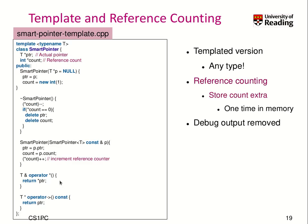Now we generalize this simple class. First, we make it a template to support any type, not only an integer — we make a template of type T and make our pointer of type T. Next, we add reference counting. Every time this smart pointer's internal object is used, we manage a counter. We create the counter as a pointer. When we create a smart pointer to an object of type T, the initial reference count is 1. When we destruct the smart pointer, we reduce the counter, and if it reaches 0, we delete the object and also delete our counter, which was allocated on the heap.